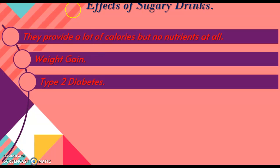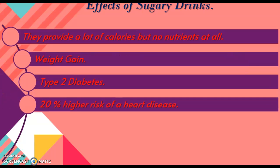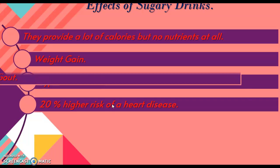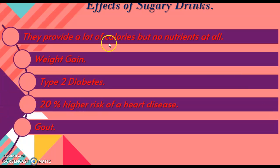People who drink a lot of high-sugar drinks also have a certain probability of suffering from type 2 diabetes, which is a disease caused by high amounts of sugar in the blood. Additionally, people who consume sugary drinks have a 20 percent higher risk of heart disease, and can suffer from a heart attack. These people can also suffer from gout, which is a kind of arthritis that affects the musculatory system and the bones.